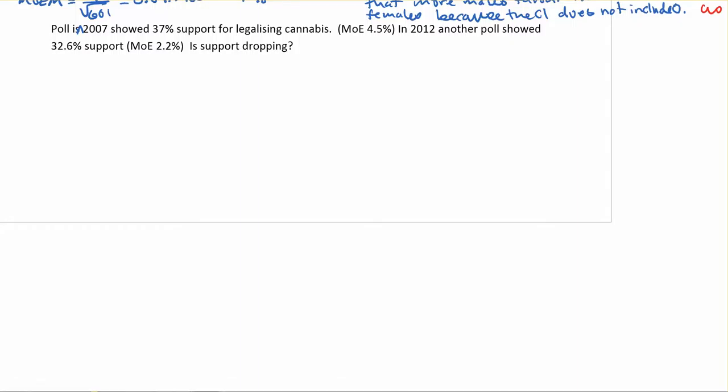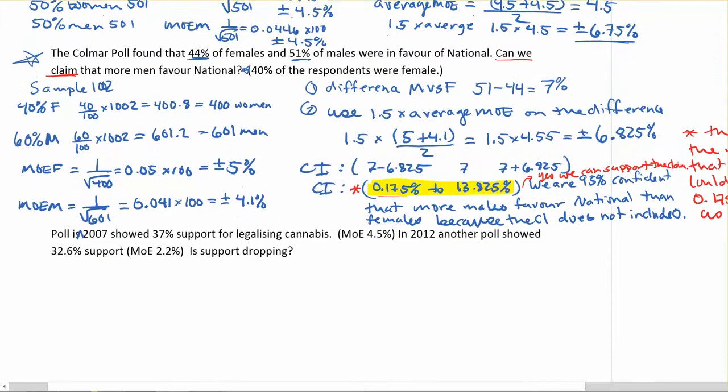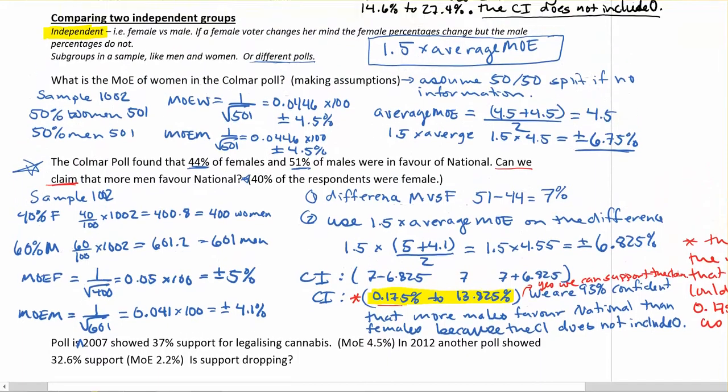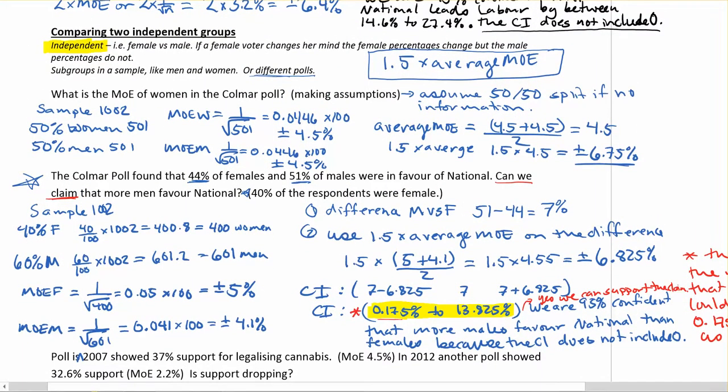So in this case, we're just trying to look at this claim saying that we've gone from 37% down to 32.6%. Is support dropping? And remember, always we're trying to deal with that uncertainty. So as we've done in similar examples, we need to find our margin of error for the difference here. And when we're comparing two independent groups, we need to make sure that we're using 1.5 times the average MOE.